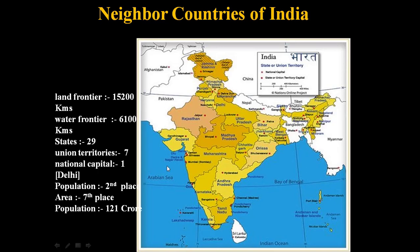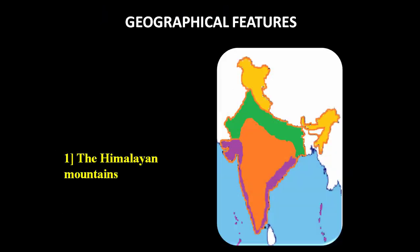India is the second most populated country in the world, and area-wise India stands in seventh place. According to the 2011 census, the population is 121 crore. The neighboring countries of India are Pakistan, China, Nepal, Bhutan, Myanmar, Bangladesh, Sri Lanka, and Afghanistan.